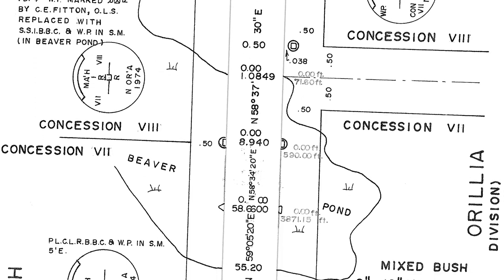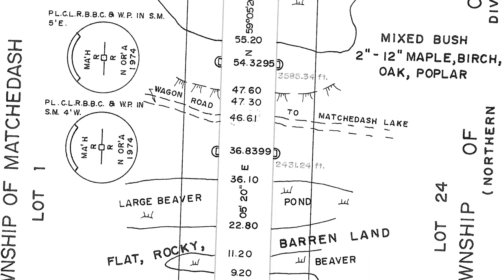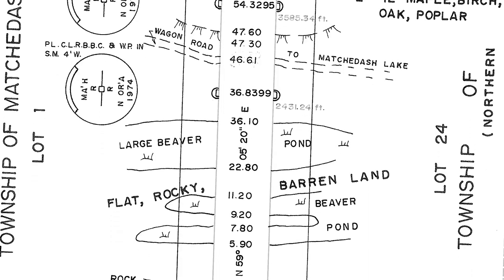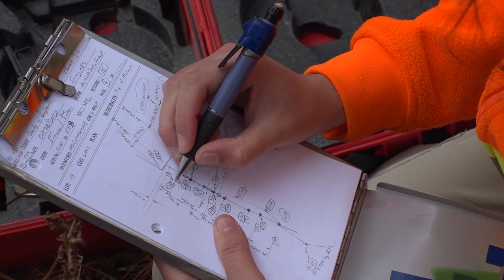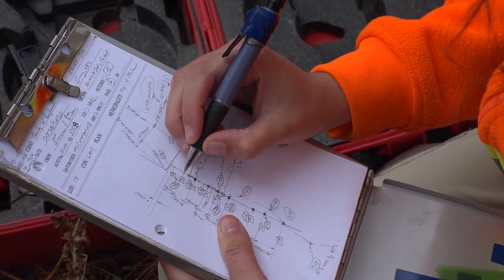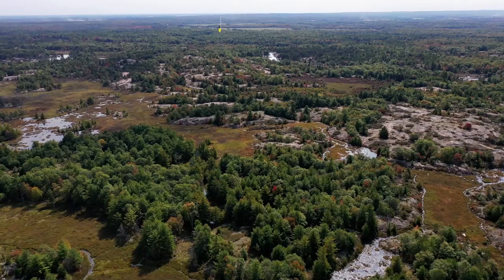When a surveyor is re-establishing a boundary, they have to rely on the best evidence that they find. To uncover the best evidence there's a pile of research, because best evidence can be documentary, it can be physical in the field, it can be observations or measurements taken on site — but it's the whole array that come together in terms of coming to a conclusion as to where the location of the boundary is.